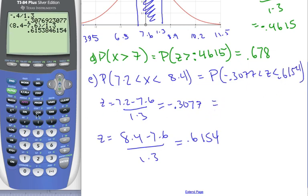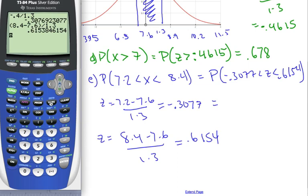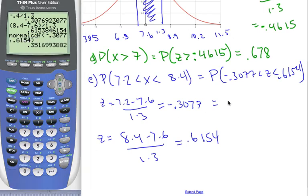So, this probability between 7.2 and 8.4 for x is the same for negative 0.3077 for z to 0.6154. I'm using my normal CDF. Now, I go normal CDF. I'm going to go from negative 0.3077 to 0.6154. And this is equal to 0.351. There's my probability for E.